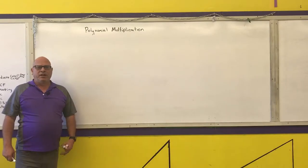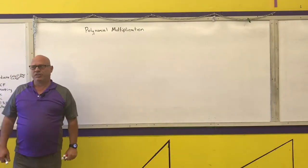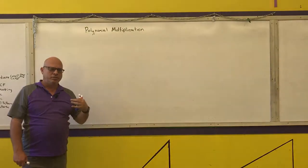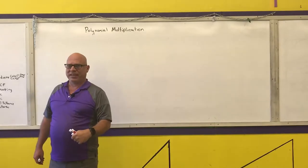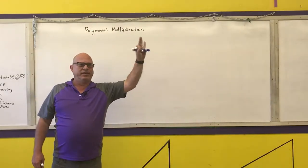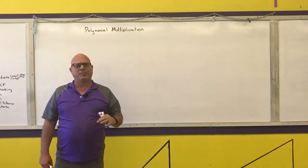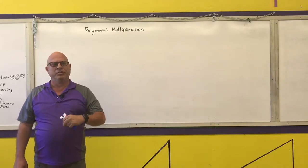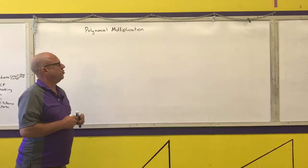The next polynomial operation we're going to talk about is polynomial multiplication. There are three basic ways that you can multiply two polynomials together. Regardless of which of the three ways you use, you're still going to do the exact same number of multiplications. Some methods are easier to use depending upon what type of polynomials you are multiplying.